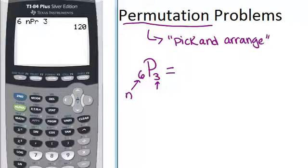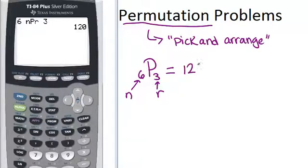So in this situation, N was 6 and R was 3, and the answer was 120. That means there are 120 different ways. If you have a group of 6 things and you want to choose and arrange 3 of them, there are 120 different ways to do that.